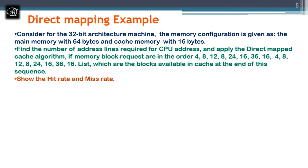Consider a 32-bit architecture: main memory is 64 bytes and cache memory is 16 bytes. We need to find the address lines required for 64 bytes and apply direct mapping. The given block request sequence is: 4, 8, 12, 8, 24, 16, 36, 16, 4, 8, 12, 8, 24, 16, 36, 16 — intentionally chosen to demonstrate direct mapping's disadvantage.